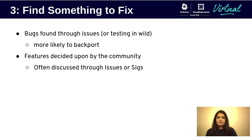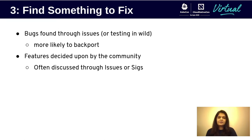Bugs are when the program doesn't behave as expected. They are generally found when users test the project in the wild or in their production environments. On the other hand, features can be thought of as nice-to-have things that help make the project even better. Features are usually decided upon by community discussions through either issues or SIG meetings.